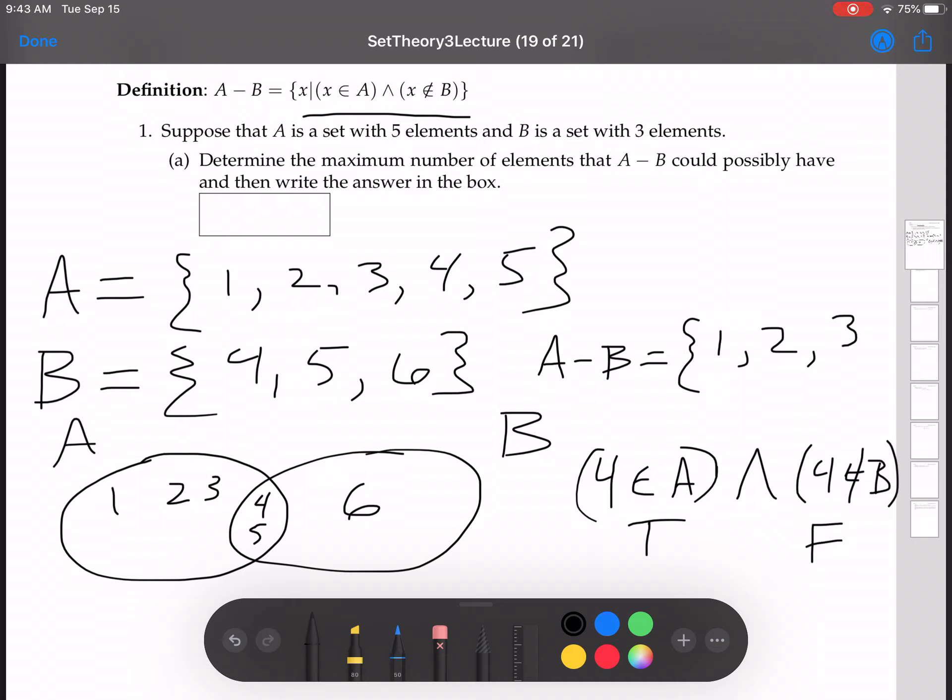Similarly, 5 is not in A minus B. Similarly, 6 is not in A minus B because it fails the first condition that x is in A. 6 is not in A, so we have false and true in that case.